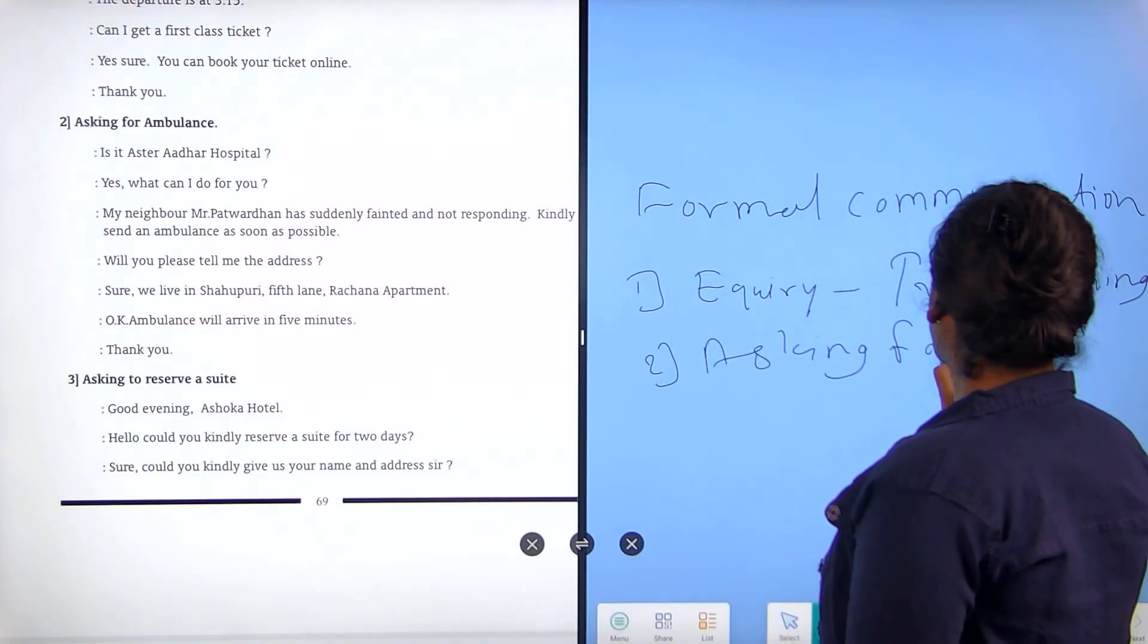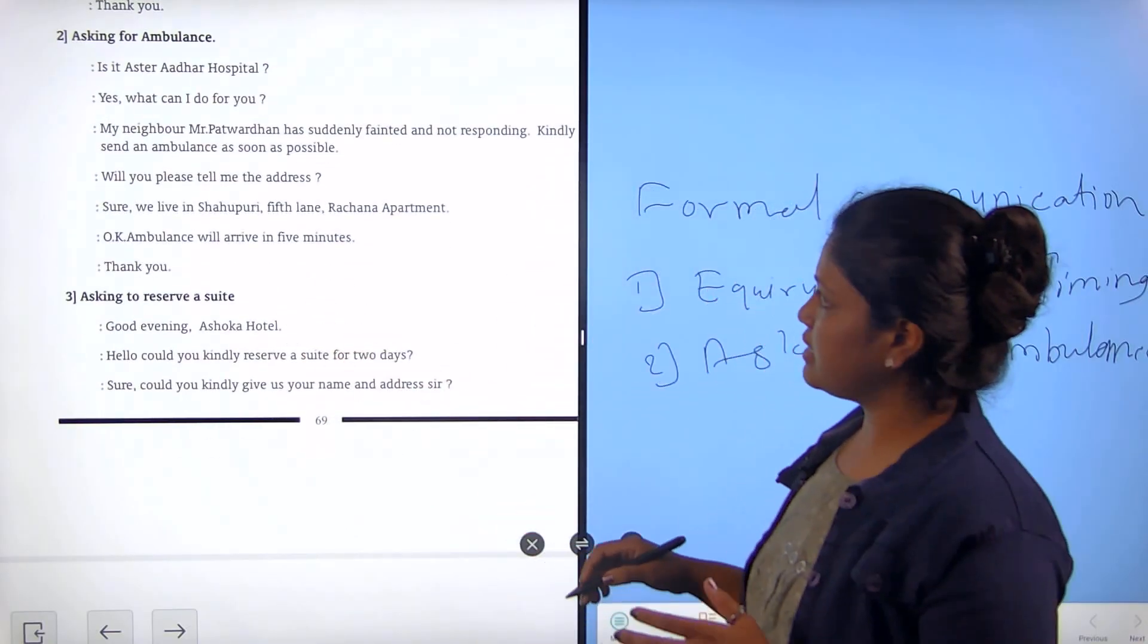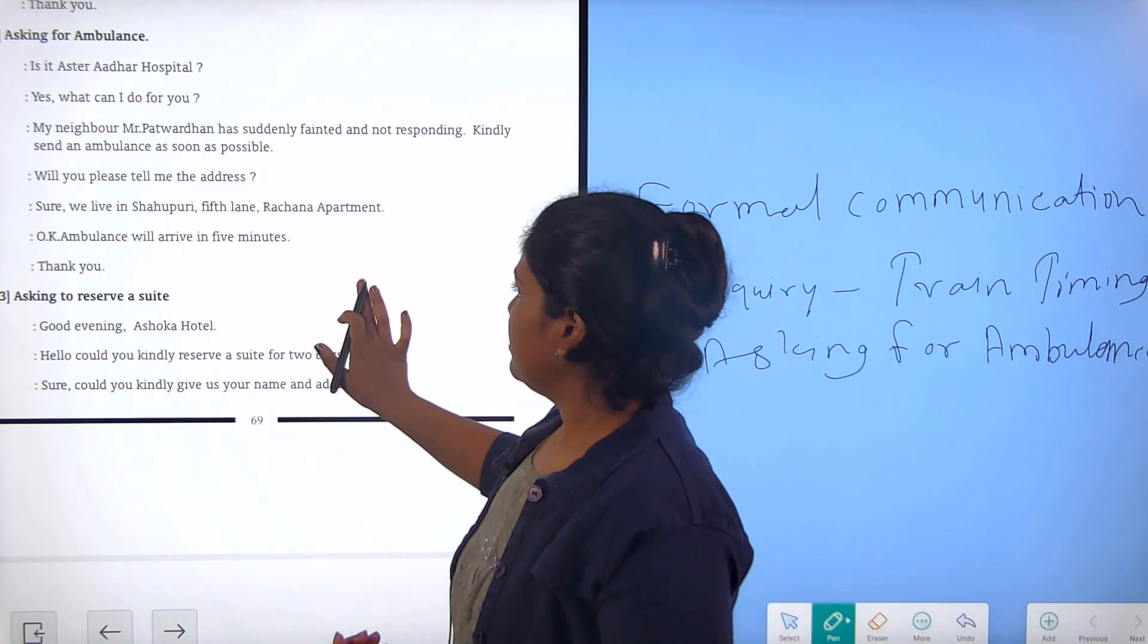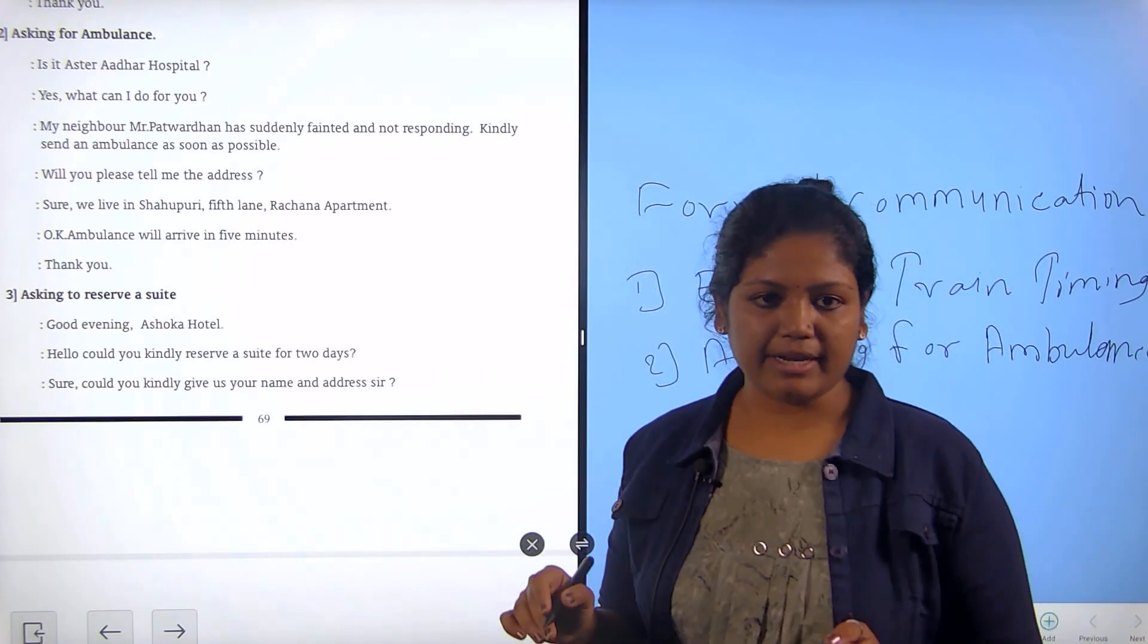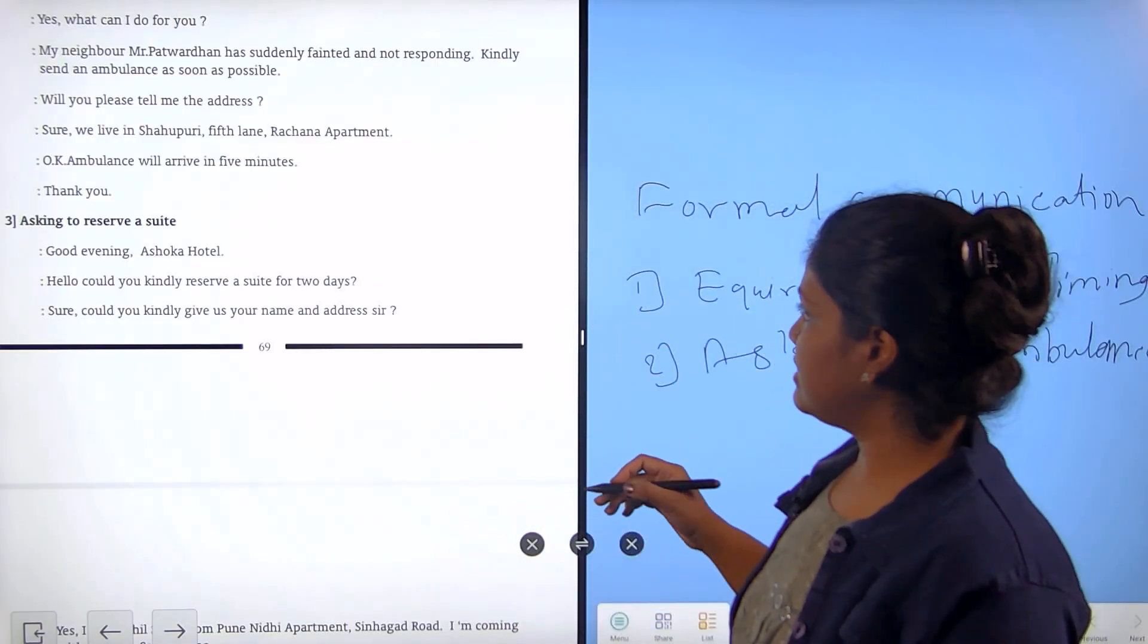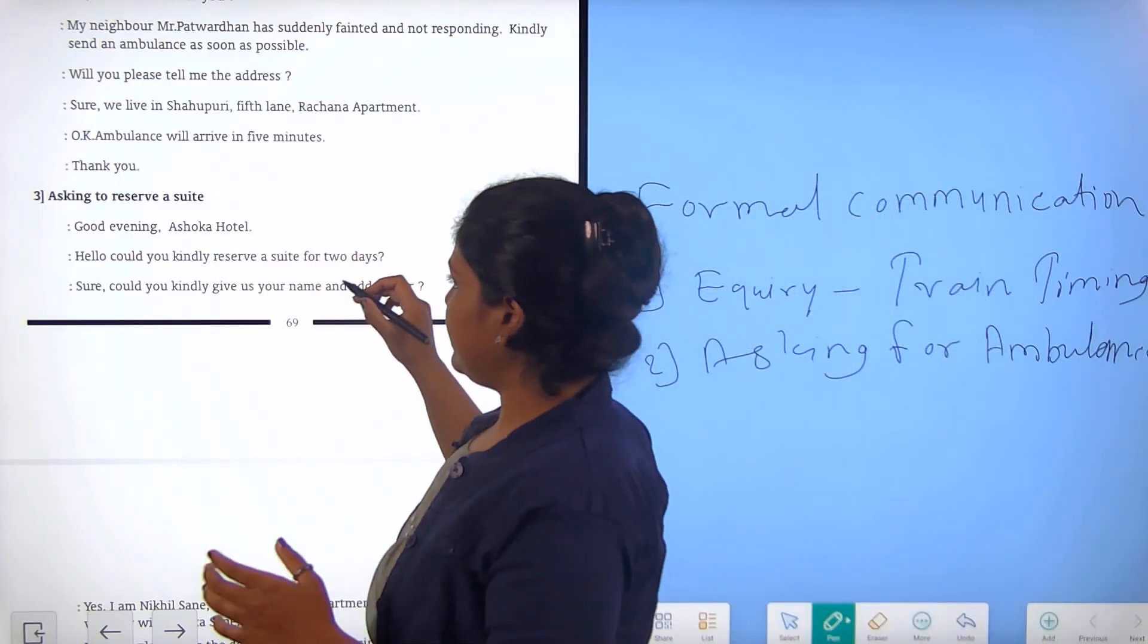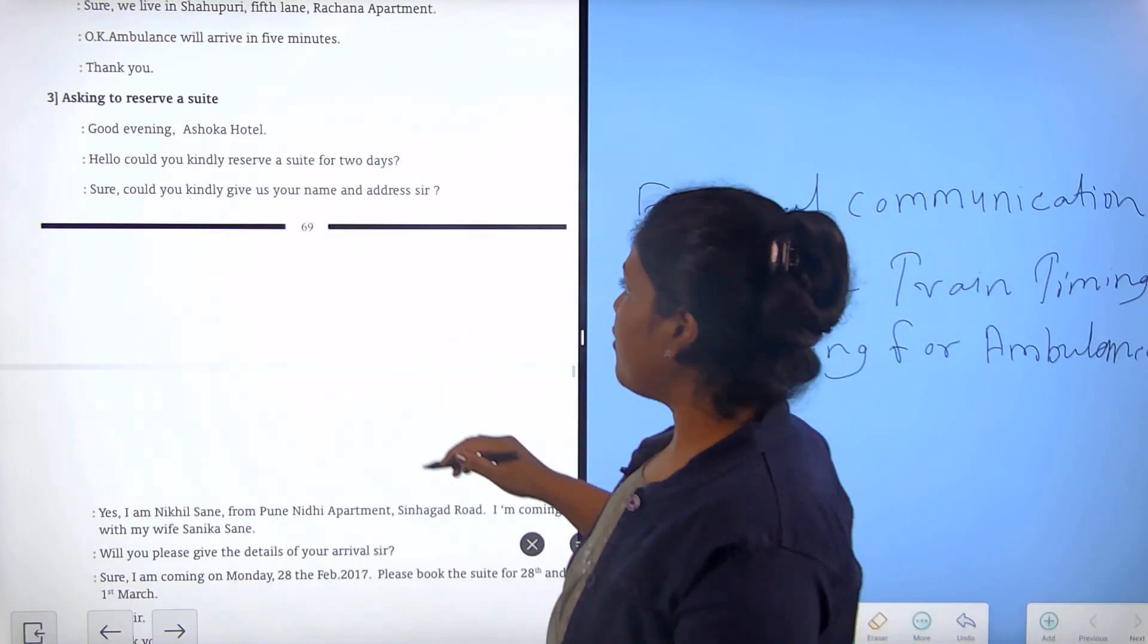The next one is asking for ambulance. First question is, is this Astar Adhar Hospital? Answer is yes. Then question, what can I do for you? Answer, my neighbor Mr. Pradhan has suddenly fainted and not responding, kindly send an ambulance as soon as possible. Will you please tell me the address? Answer, sure we live in Shahupuri, fifth lane, Rachina Apartment. Okay, ambulance will arrive in five minutes. Then lastly thank you. It is a conversation for asking ambulance.